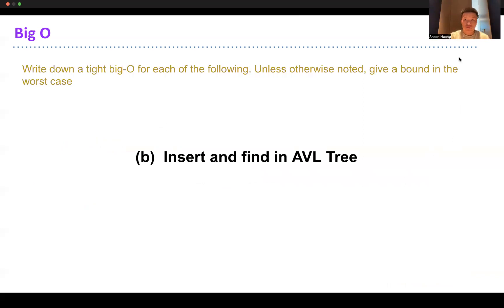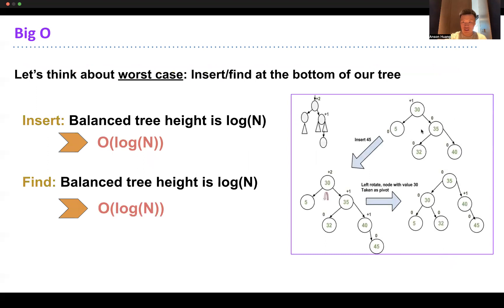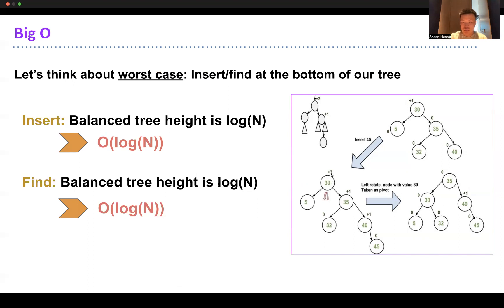For an AVL tree, the worst case runtime for insertion and find is O(log N). One benefit of keeping balanced is that the tree is never going to be skewed - the height difference between every node is at most 1. Like we talked about, the height of an AVL tree is log N. To get from the very top to the very bottom takes log N time. So the worst case runtime is O(log N), all thanks to the tree being balanced.